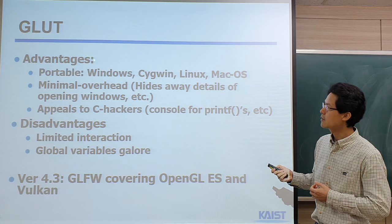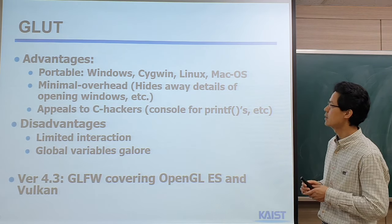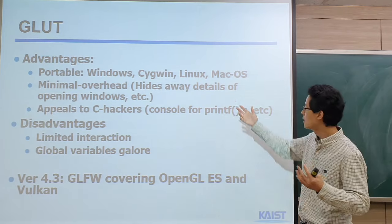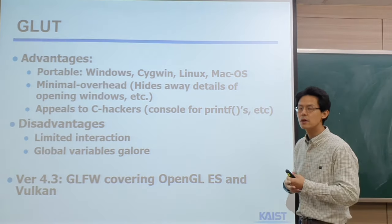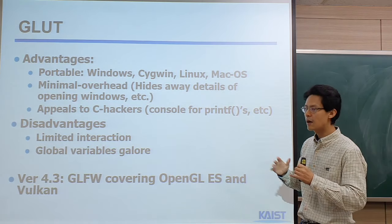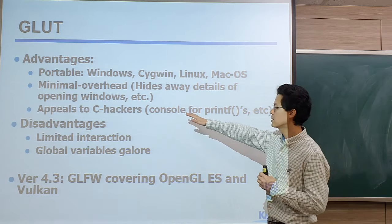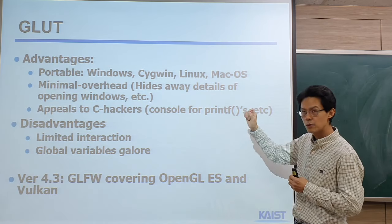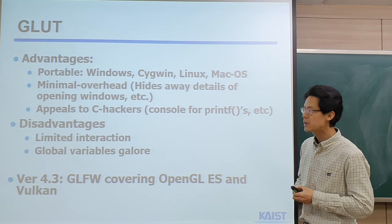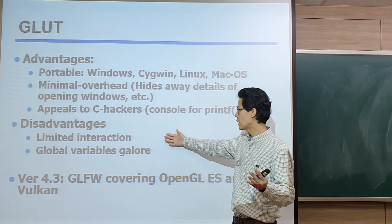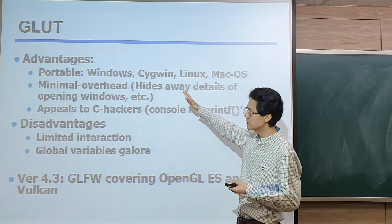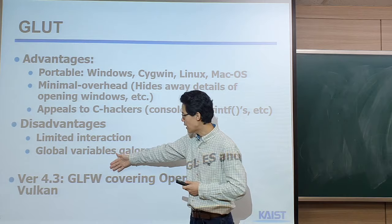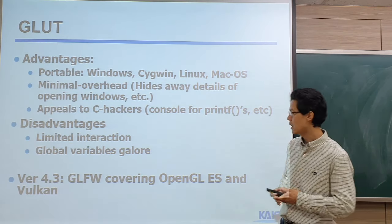GLUT is actually portable to Windows and other different operating systems. It has a very simple overhead — it hides away a lot of details, for example for opening a window in your OS. It's very easy to use. But it doesn't have a lot of functionality and has very basic functions. It comes with limitations: it doesn't support a wide set of interactions, and it's kind of old — it even uses global variables. Some recent libraries support newer graphics technology like the Vulkan library.